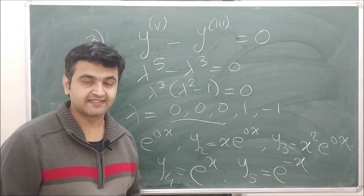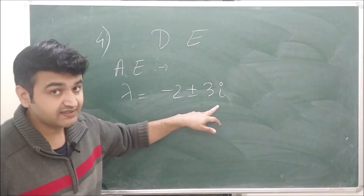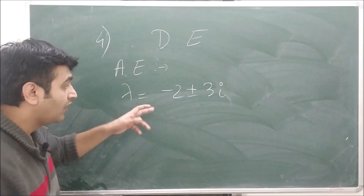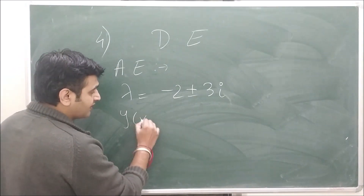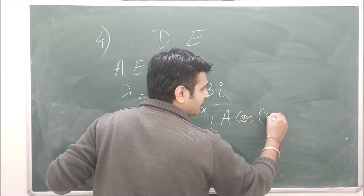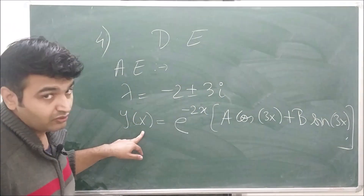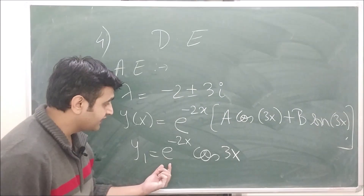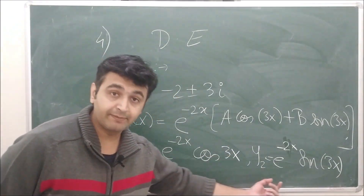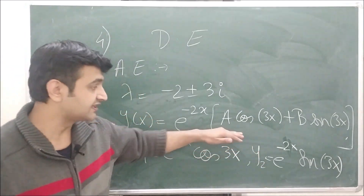Now let's go to the complex case. Suppose the auxiliary equation has roots −2 ± 3i. Since there are two roots, this is a second order differential equation. Recall the formula: the general solution is y(x) = e^(real part · x) · [a cos(imaginary part · x) + b sin(imaginary part · x)], which gives y = e^(−2x)(a cos(3x) + b sin(3x)). So y₁ = e^(−2x)cos(3x) and y₂ = e^(−2x)sin(3x) are two linearly independent solutions, and this is the general solution.